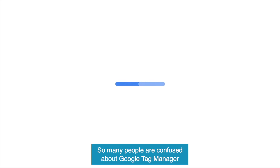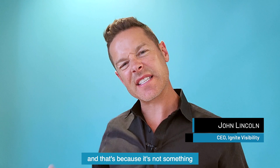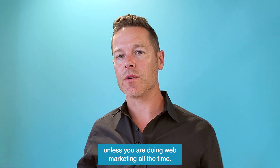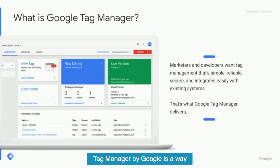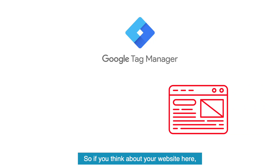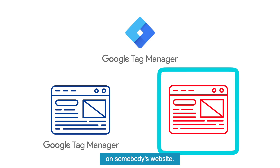What is Google Tag Manager? So many people are confused about Google Tag Manager, and that's because it's not something that you would intuitively understand unless you were doing web marketing all the time. Tag Manager by Google is a way to deploy tags on a website. So if you think about your website here, Tag Manager is a whole other website and it allows you to set up a container on somebody's website.